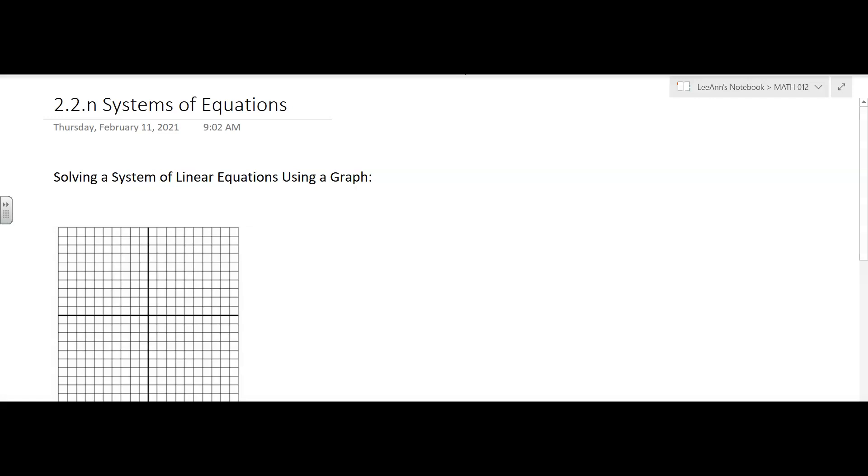We're going to talk about systems of equations. There's different ways of solving a system of equations. Let me come up with an example first of all. Let's say I have y equals 2x plus 3, and let's say I have another equation, y equals negative 1/3 x plus 1. Usually when they have a system of equations, they're going to put some kind of indicator, like a brace or bracket, that says we're going to use those two equations together.